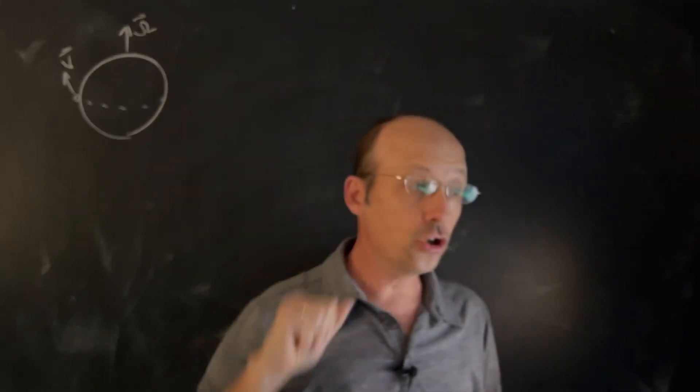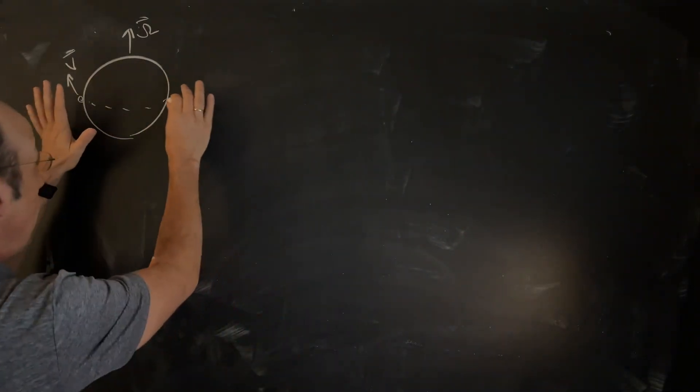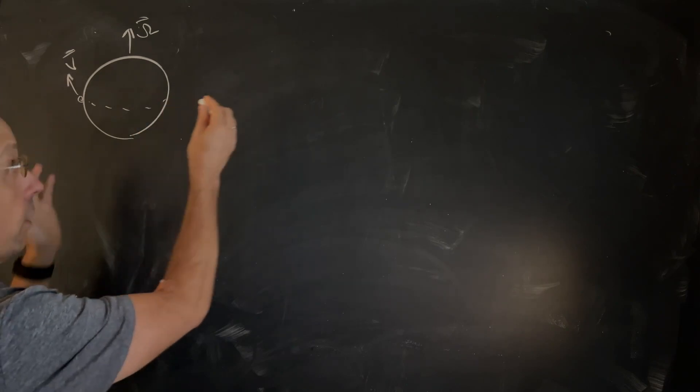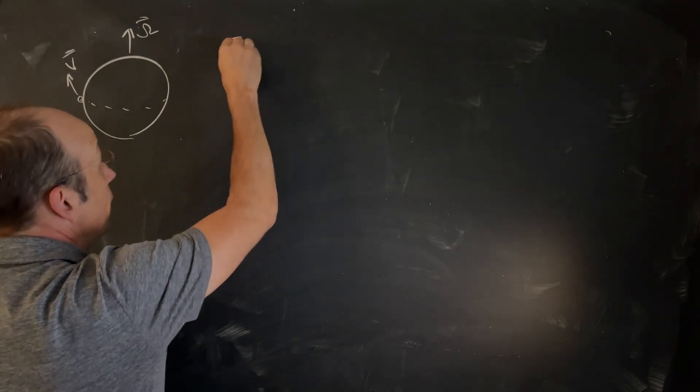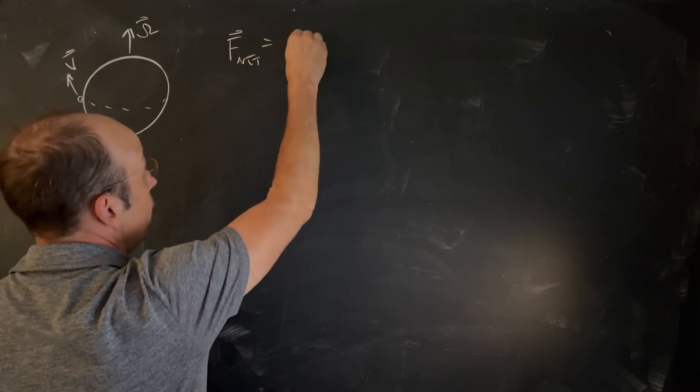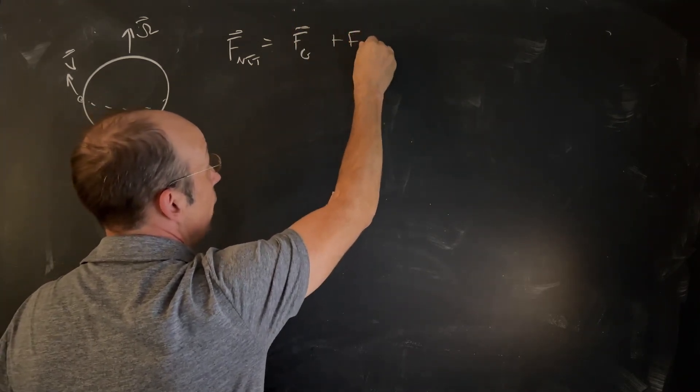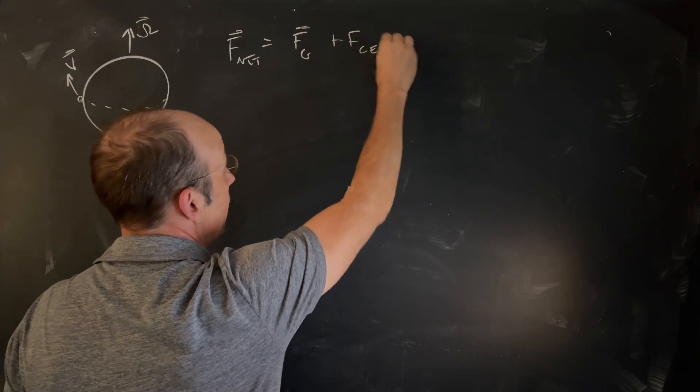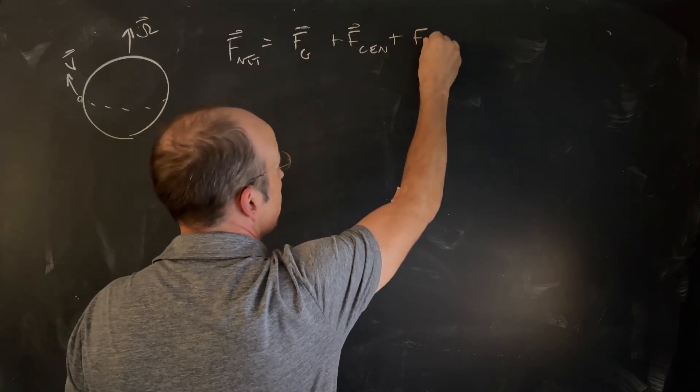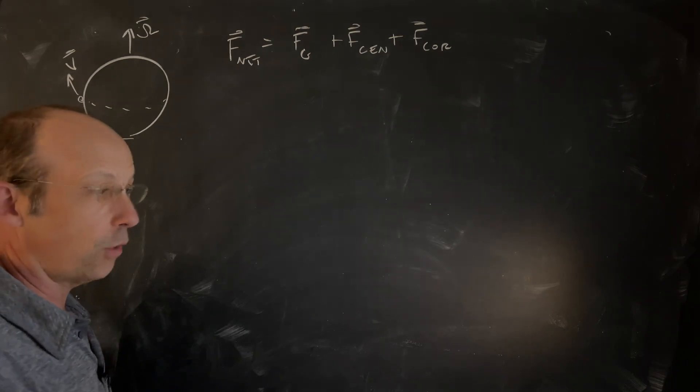I'm going to model that motion two ways. The first way is in the frame of the rotating asteroid. In that case, I will have the net force as the gravitational force Fg, plus the centrifugal force Fcen, plus the Coriolis force Fcore. So we have to quickly define all these.